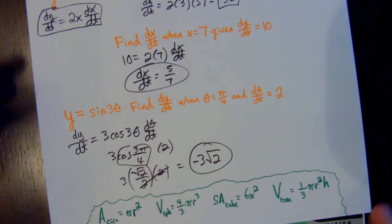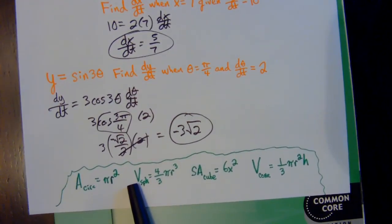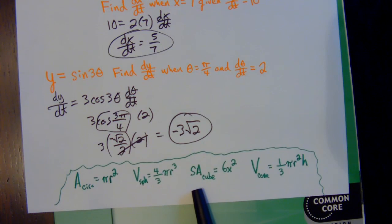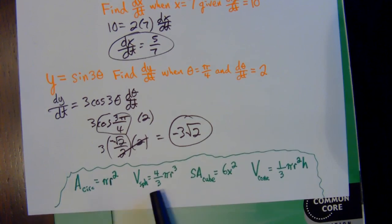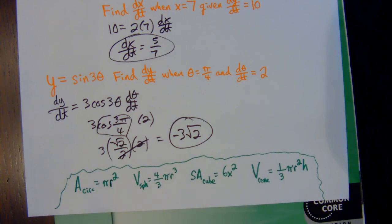That's the level one stuff. I also included some geometry formulas you might need throughout the homework: area of a circle, volume of a sphere, volume of a cone, surface area of a cube. If you come across something else, just look it up. Typically on a test — including the actual AP test — they give us those geometry formulas. Some basic ones they don't always provide, so be familiar with those. I'll go ahead and give you the geometry formulas so you don't have to worry about memorizing them. That's level one — go to the next video for level two word problems.